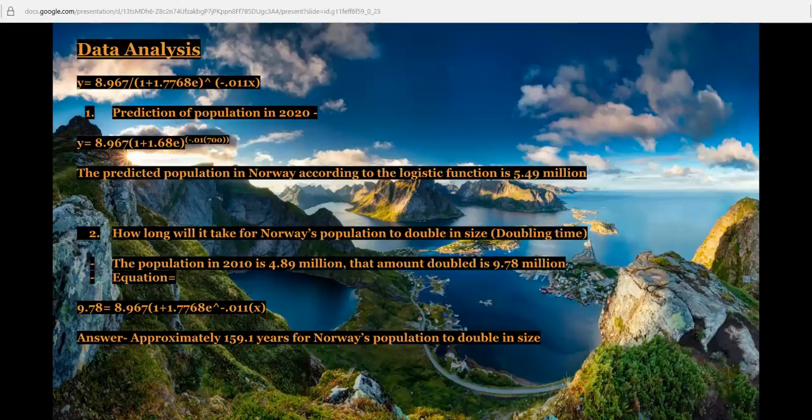If we plugged in the doubling size, so the population right now is 4.89, if we doubled that to 9.78 million and we plugged that into the Y, we would find out that it would take Norway's population 159.1 years for the population to double in size.